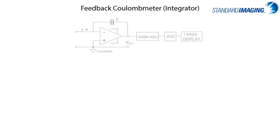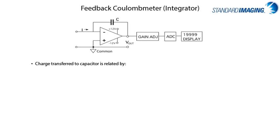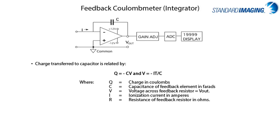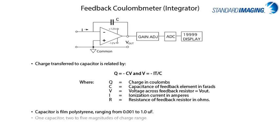The other preamplifier circuit used in electrometers is the picocoulometer, where the ionization current is incoming and passed through a capacitor, related by the standard electricity relationships Q equals negative CV and V equals negative IT over C. Most capacitors use film polystyrene and range from 0.001 to 1 microfarads for medical physics applications. One capacitor has 2 to 5 magnitudes of charge range for most standard electrometers.